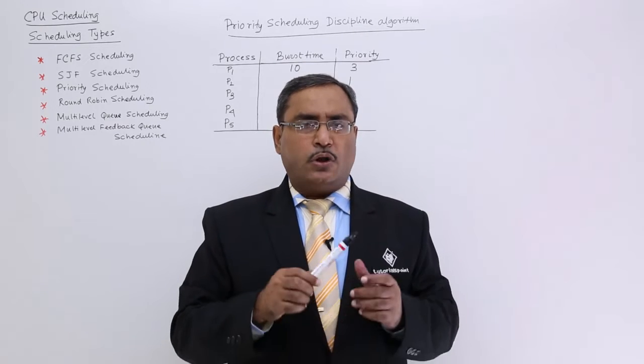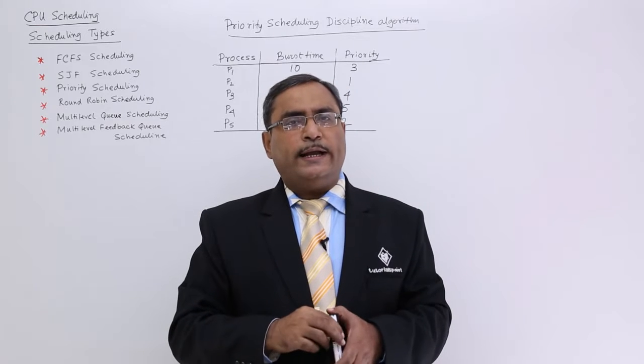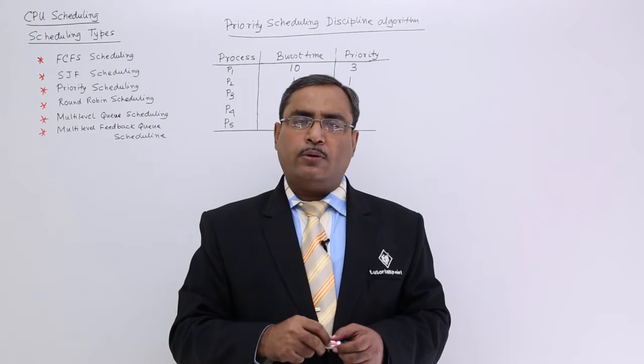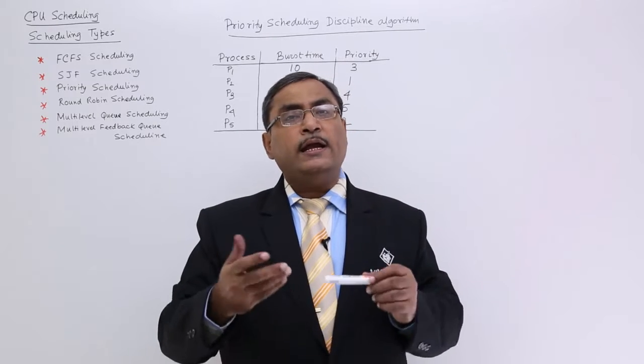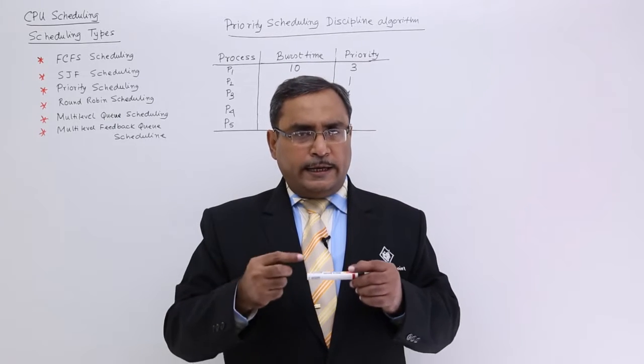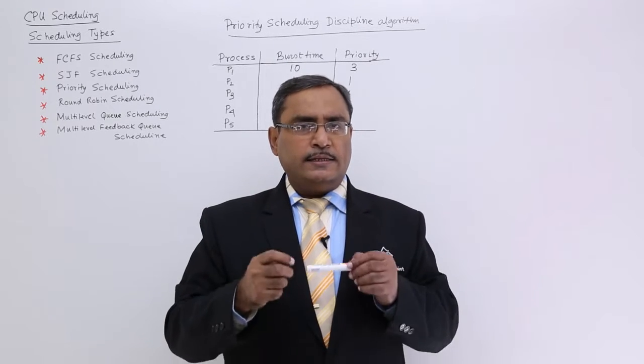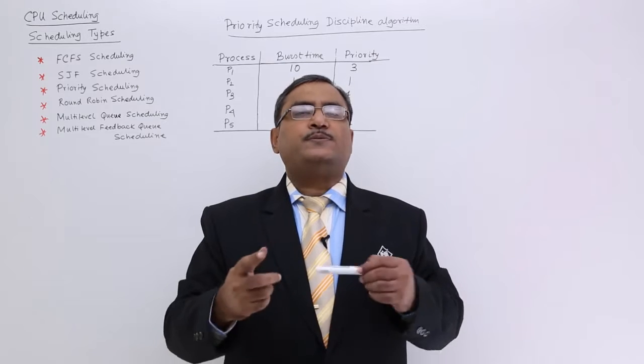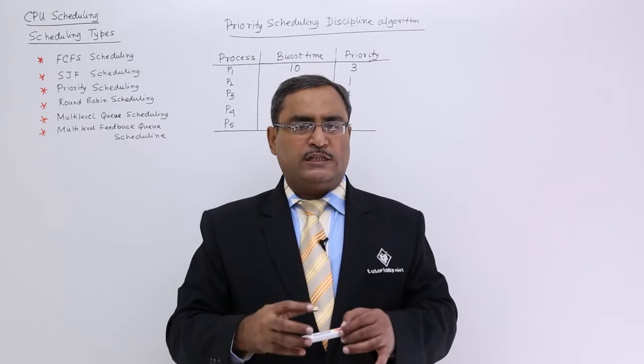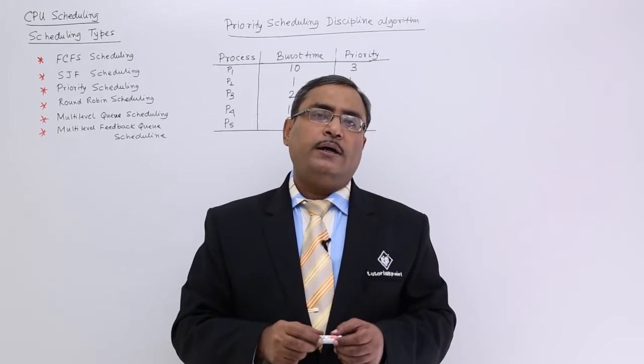And what is the solution? The solution is aging. Aging means each and every time when the process will get denied to get the access over the CPU by the system or the scheduling algorithms, then the priority of the process will get increased. So, in this way, for each and every time when it is getting denied and the priority is getting increased, after some time, we may find that this is the process with the highest priority. Then the scheduling algorithm will be bound to give this CPU to the process for the execution. And that is the origin of the priority scheduling.